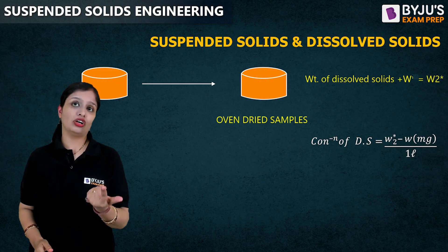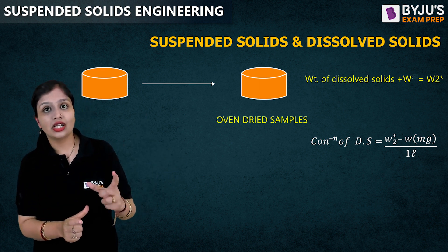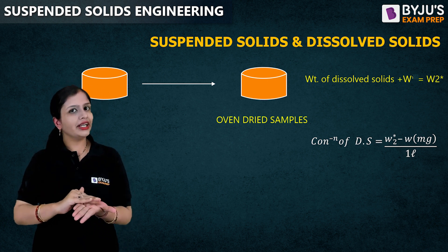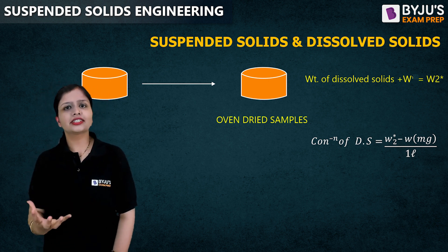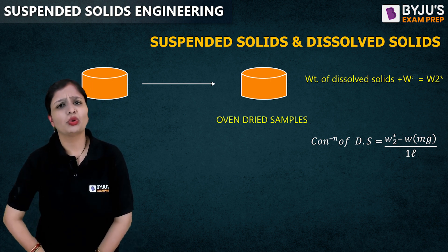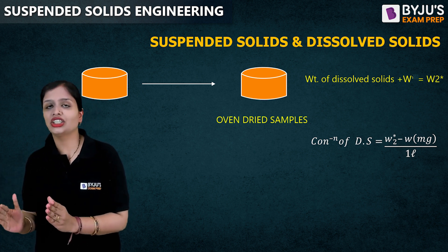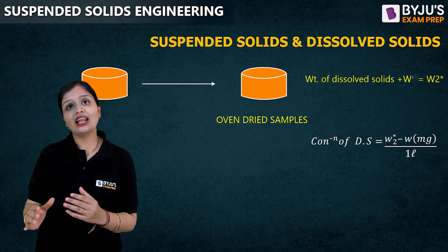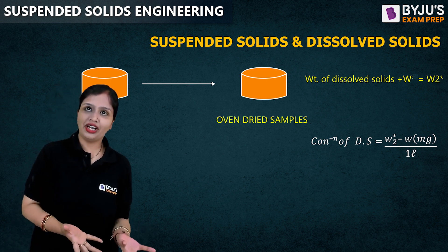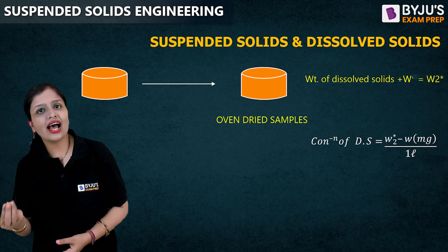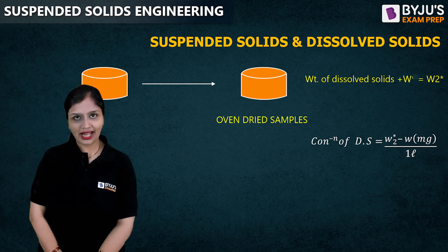A similar thing goes for dissolved solids. When you poured the sample through the glass fiber filter, the suspended solids were retained in the filter paper, but the dissolved solids were not — dissolved solids passed through into the beaker or crucible. I will take that sample, heat it at 104°C for 24 hours, and after that get the weight of dissolved solids plus the weight of the crucible. To calculate the weight of dissolved solids, I do W2* minus the weight of the crucible. To get concentration, divide by the volume of sample taken.